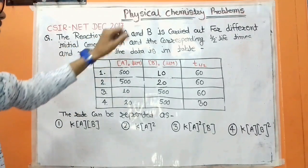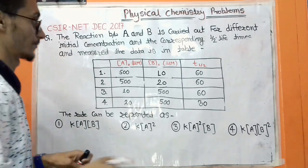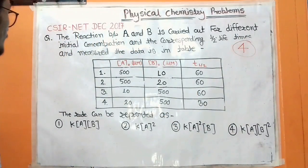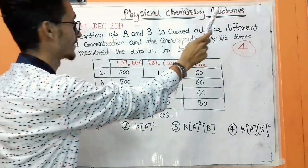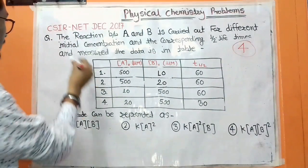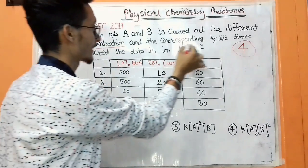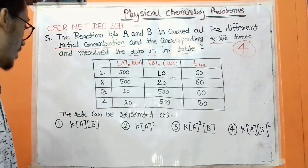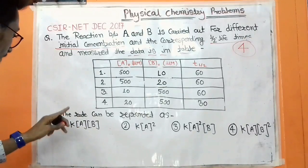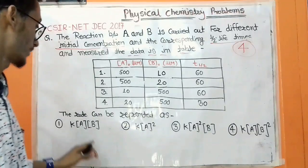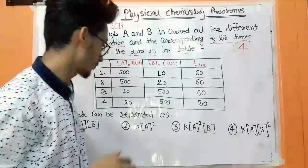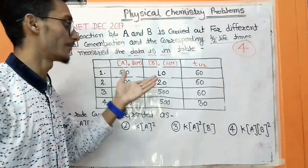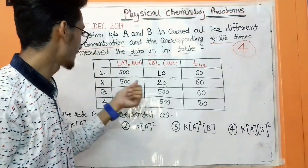The first problem comes from December 2017 and carries four marks. The problem states that a reaction between A and B is carried out at different initial concentrations, and the corresponding half-lives are measured. The data is given in a table. We need to find how the rate can be represented — four options are given and we must find the right answer.